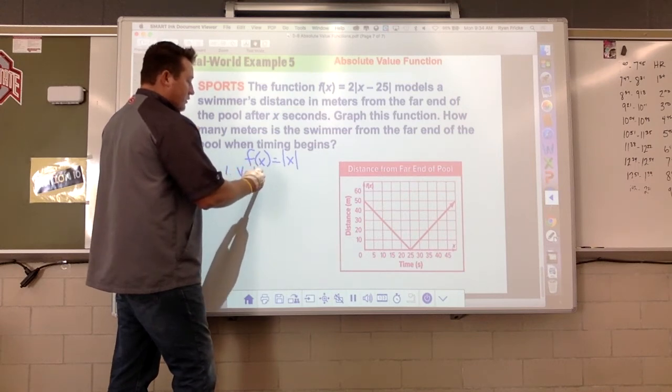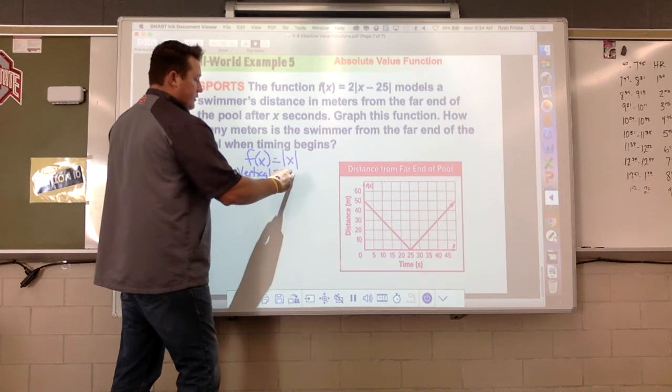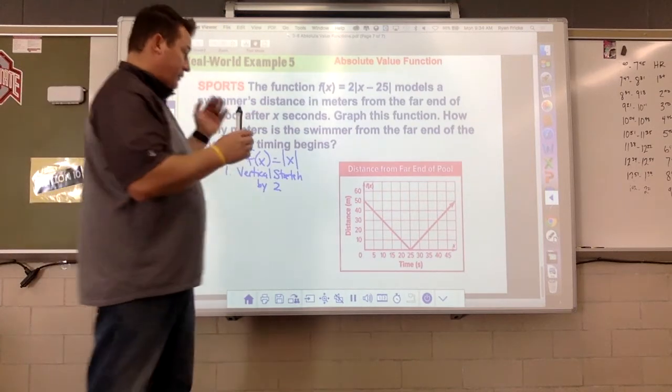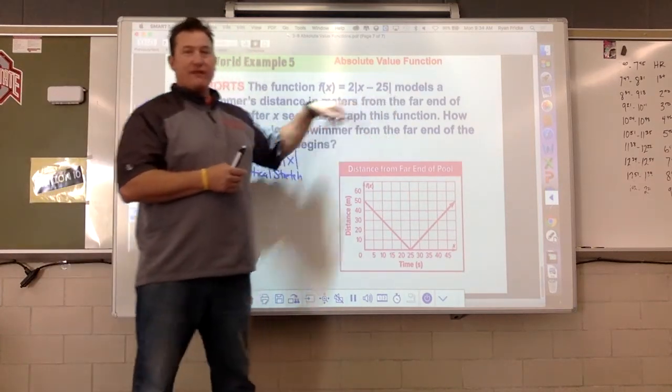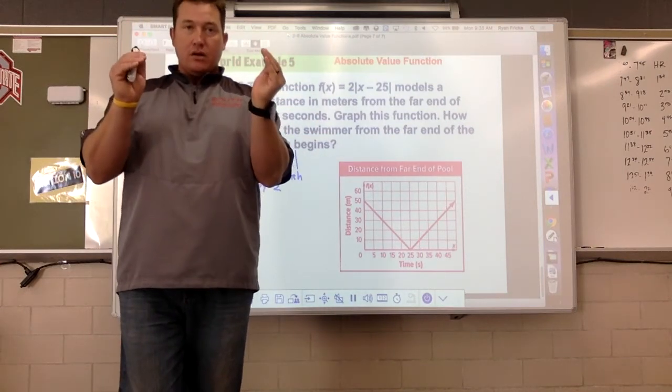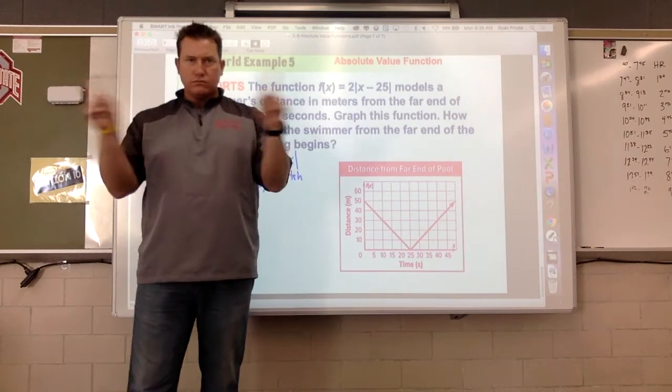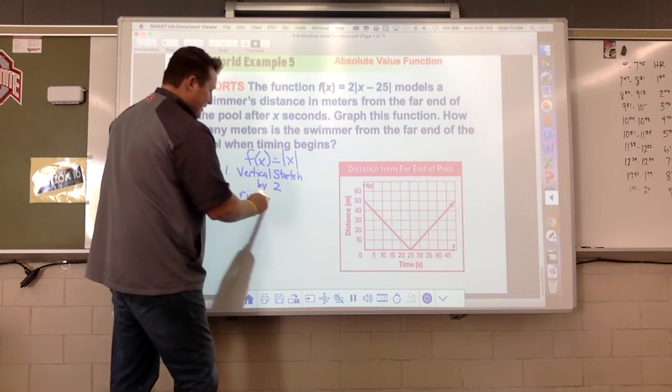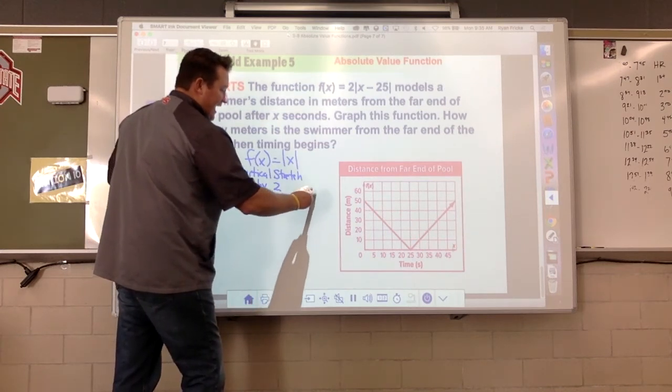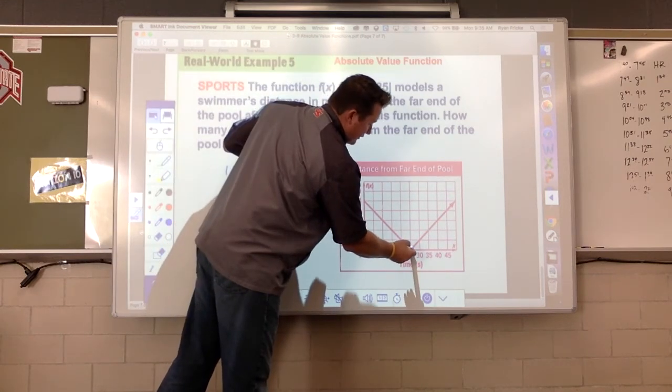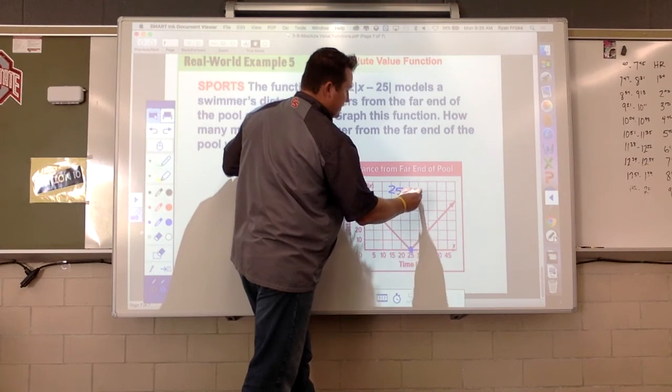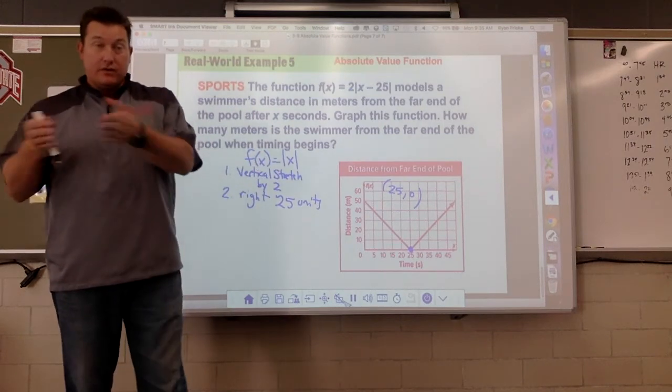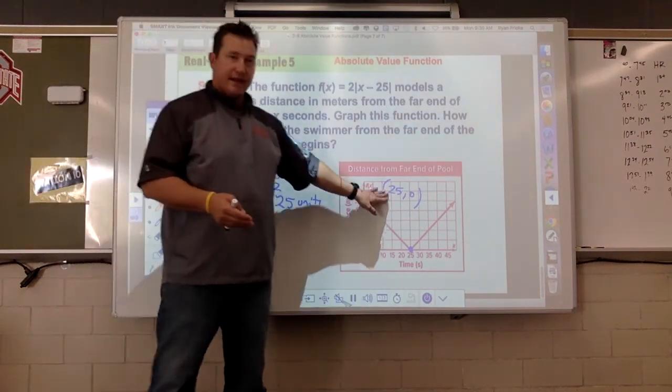By a factor of two, so that makes it get taller, that would make it get taller. And then what is the minus 25 do? Again, it's inside the expression, so this is a left or right move. Which way does it go? It goes that way. So this is a right 25 units. And that makes sense because look, here's the vertex and that vertex is at the point 25 comma 0. We know the parent function is at the origin, 0 comma 0. So we would have to go to the right 25 units to get there.